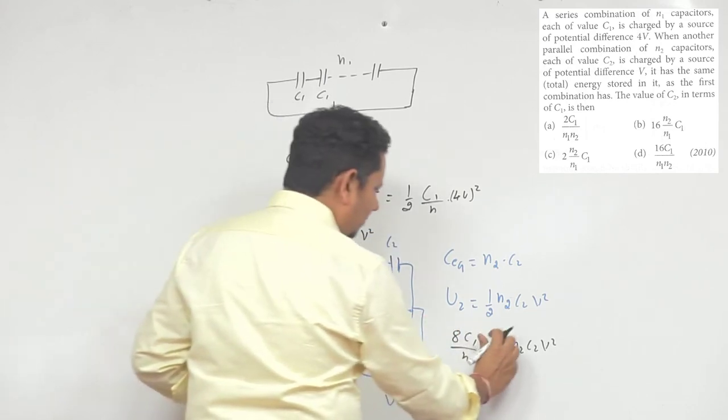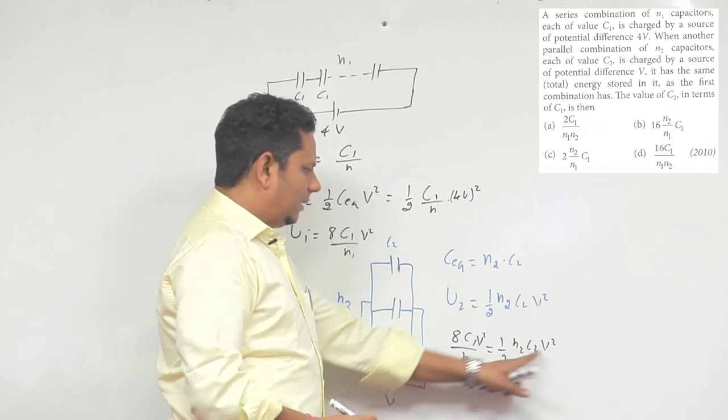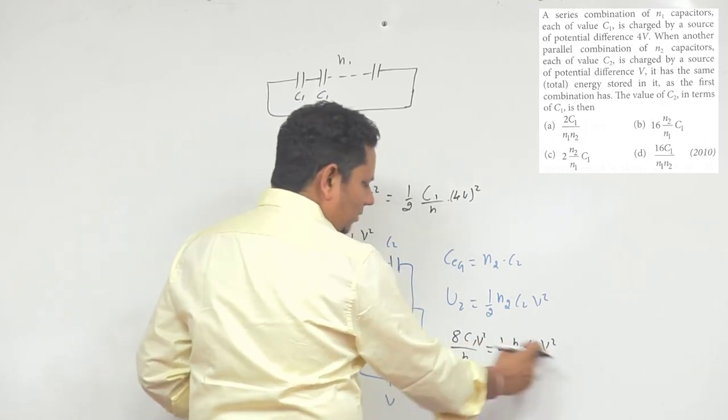V squared, okay, equating these - from here, V squared will cancel out.